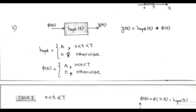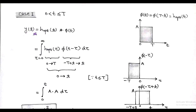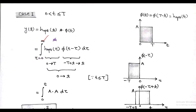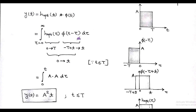Since both h(t) and φ(t) are the same, we determine the output signal y(t) as their convolution. We first consider Case 1, when t is greater than zero but less than or equal to capital T. Here φ(t) and the impulse response h(t) are identical, having value a over the interval zero to capital T. The output y(t) equals the convolution integral: ∫ h(τ) φ(t − τ) dτ, with the limit from τ equals zero to infinity. In the convolution formula, we multiply h(τ) with φ(t − τ).